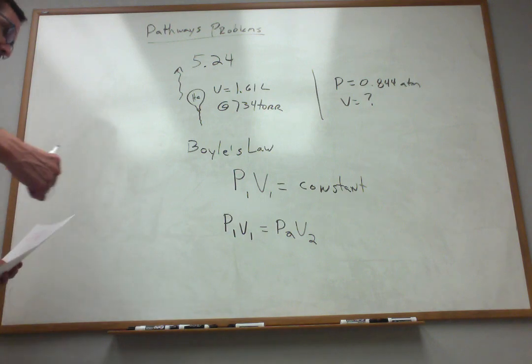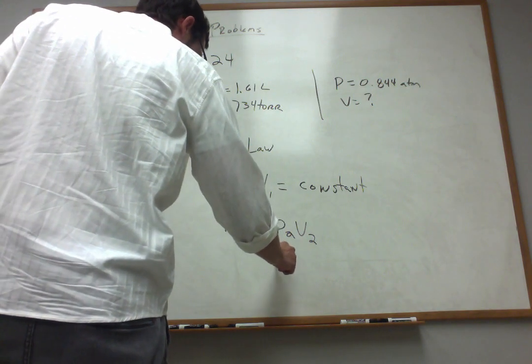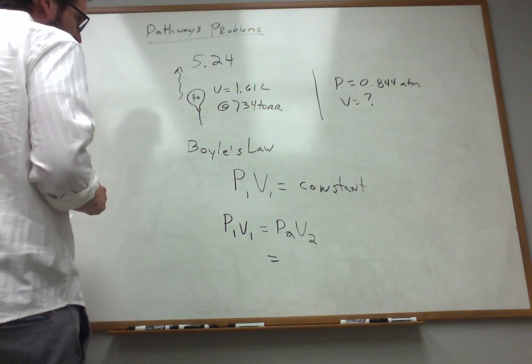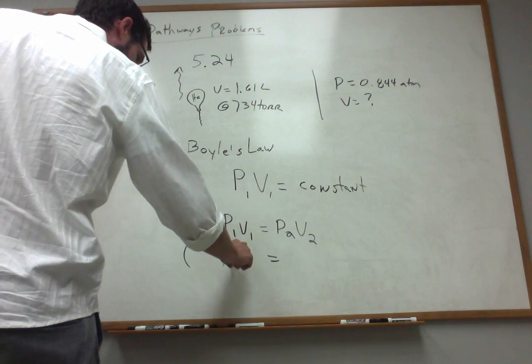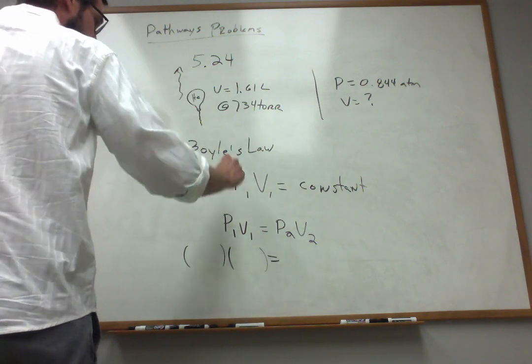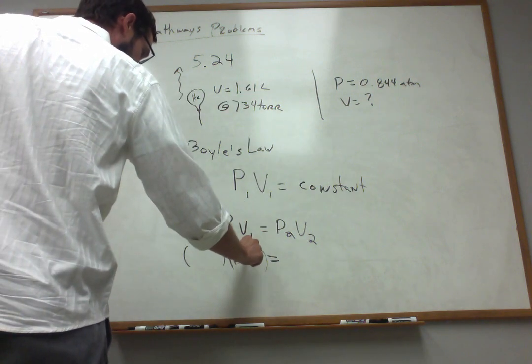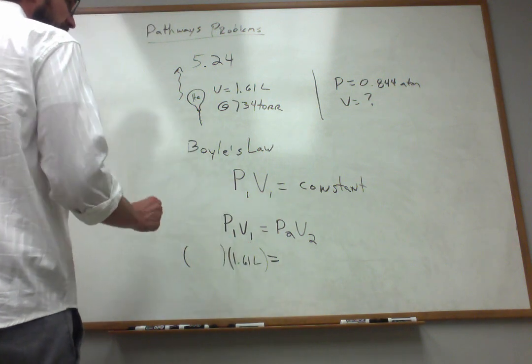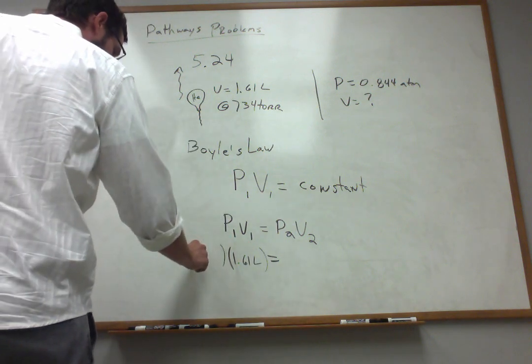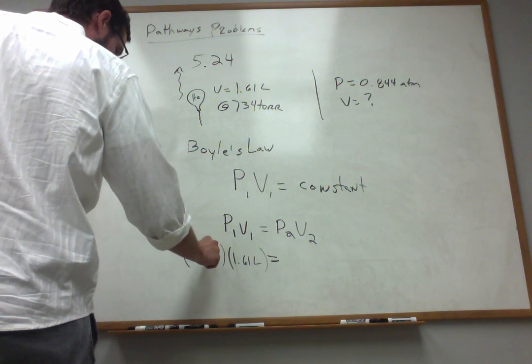We've got to have common units. Now, my volumes, I'm going to choose to represent in liters. So my first volume was 1.61 liters. And my first pressure was 734 torr.